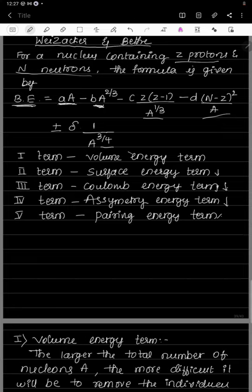The last term, ±δ/A^(3/4), is called the pairing energy term. This term sometimes adds to the binding energy and sometimes subtracts from it — meaning it can either increase or decrease the binding energy depending on the nucleus.